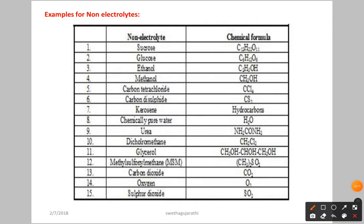Now let us see examples for non-electrolytes. You need to just remember glucose, sucrose, and urea. Generally you will come across these examples. Sucrose, glucose, and urea are examples of non-electrolytes.